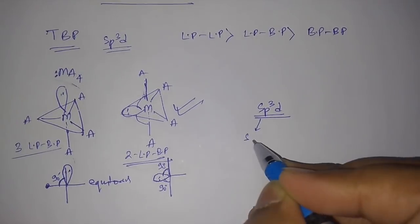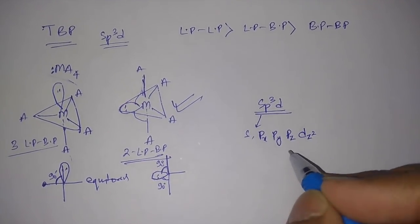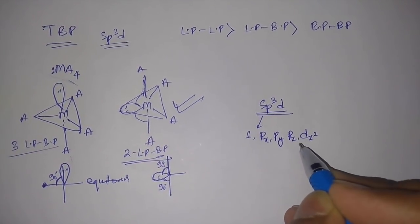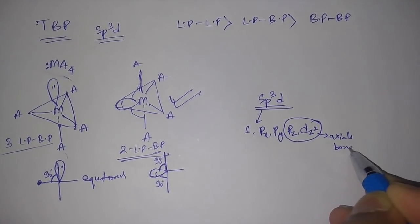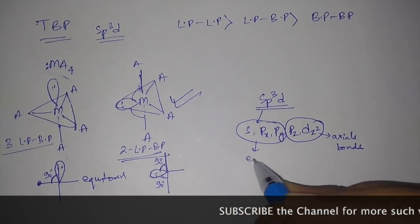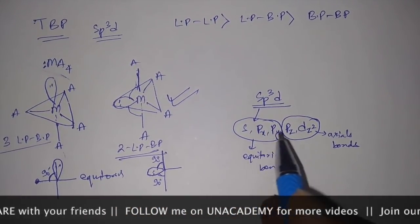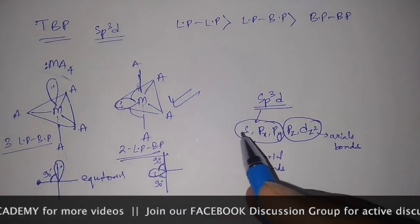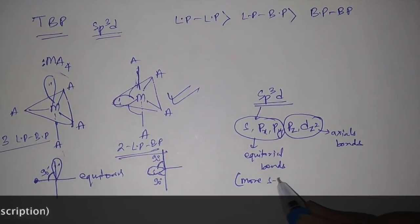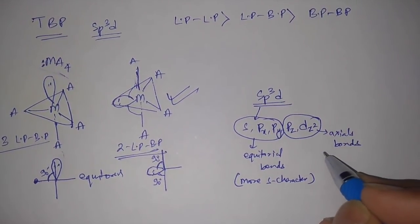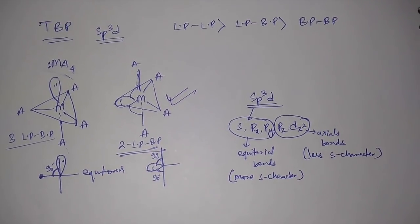The sp3d hybridization involves an s orbital, three p orbitals (px, py, pz), and one d orbital — specifically the dz² orbital. Among these five orbitals, two — pz and dz² — are responsible for the axial bonds, while the remaining three — s, px, and py — are responsible for the equatorial bonds. This means the equatorial bonds have more s-character, while the axial bonds have less s-character.